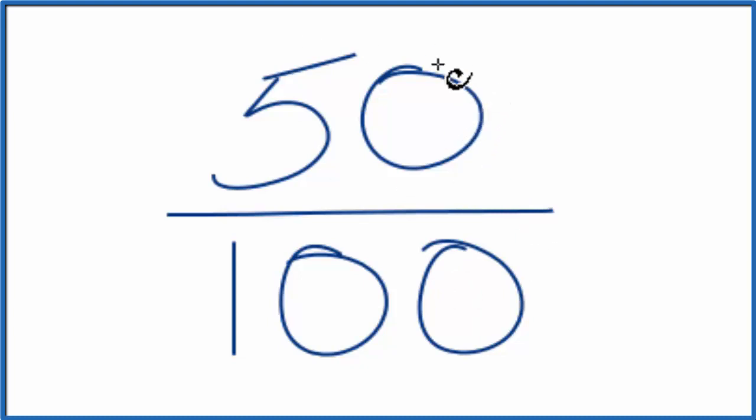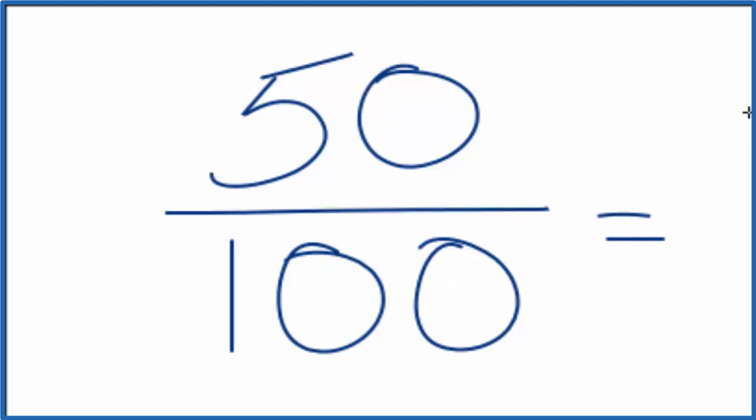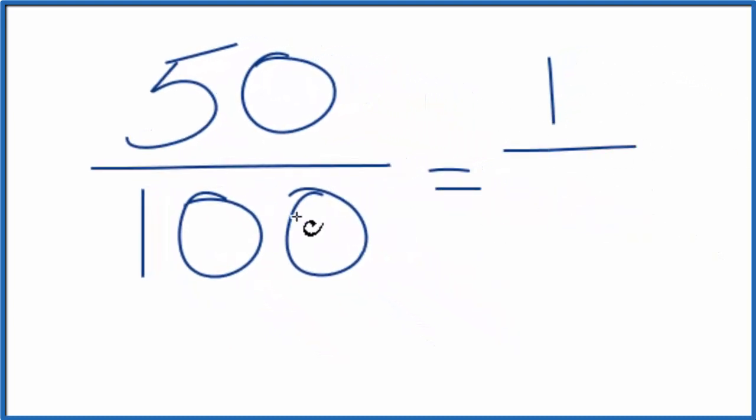I know that 50 goes into 50 once, and it goes into 100 twice. So 50 divided by 50 is 1. 100 divided by 50 is 2.